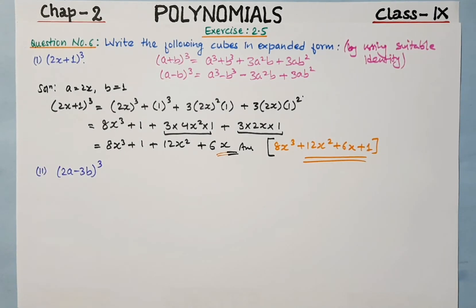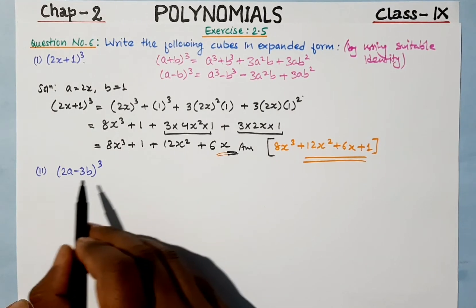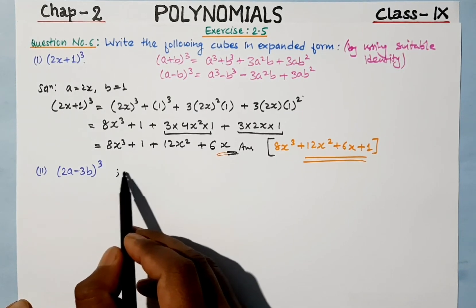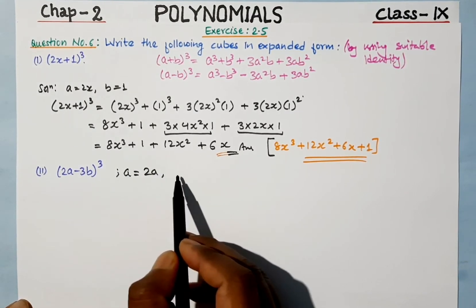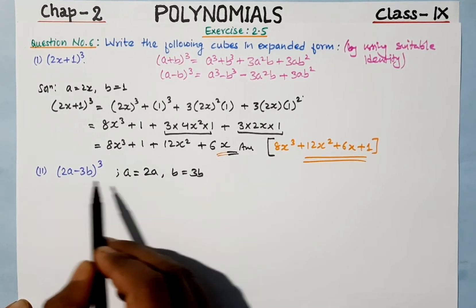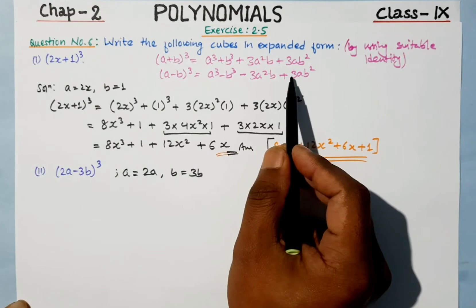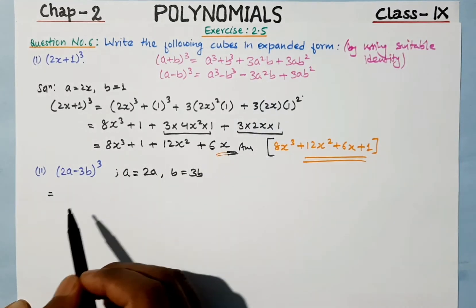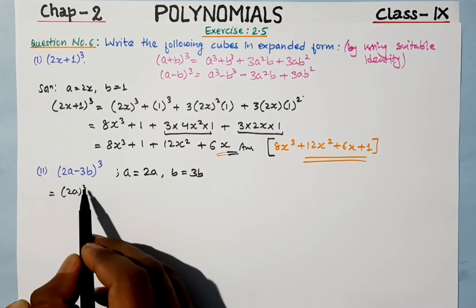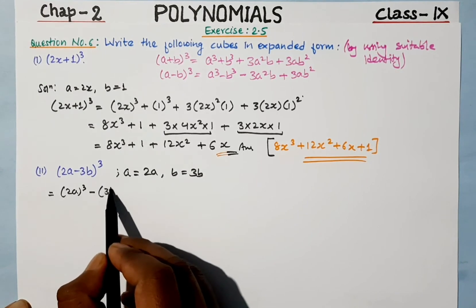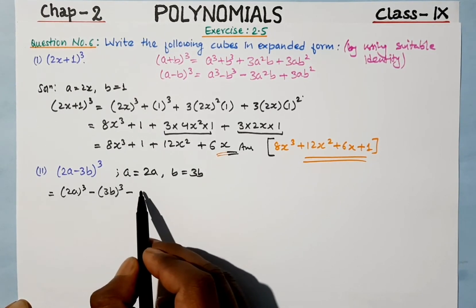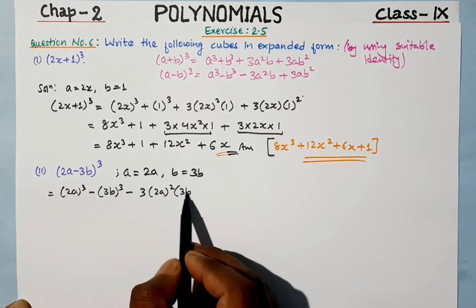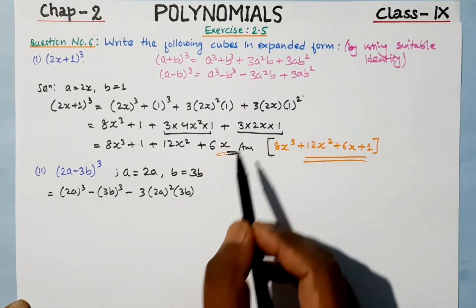Now let's see question number two. Question number two has (2a minus 3b) whole cube. Here, in place of a we put 2a, and in place of b we put 3b. The sign is minus, so we use the (a minus b) whole cube identity.